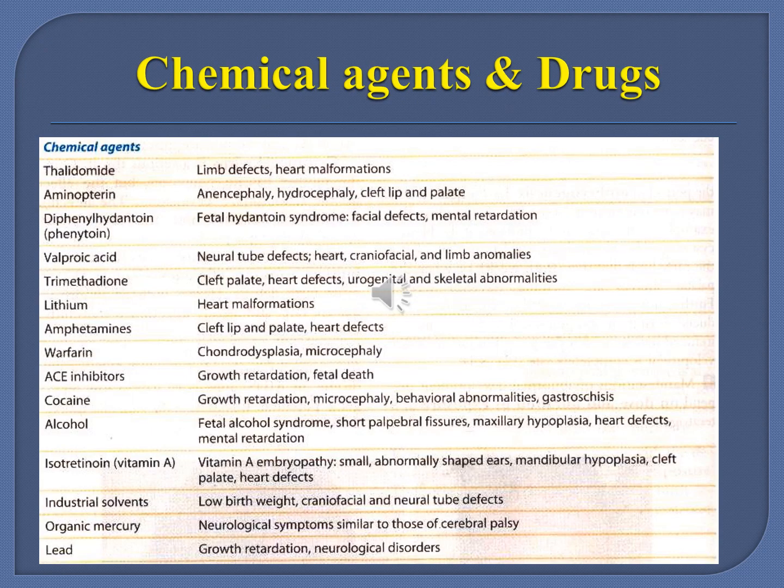Various drugs should be avoided by a pregnant lady as they are known teratogens. In the 1960s, it was found that children were born with limb defects, and it was discovered that the drug thalidomide crosses the placenta and causes birth defects. These known teratogenic drugs can cause congenital abnormalities and must be avoided during pregnancy.